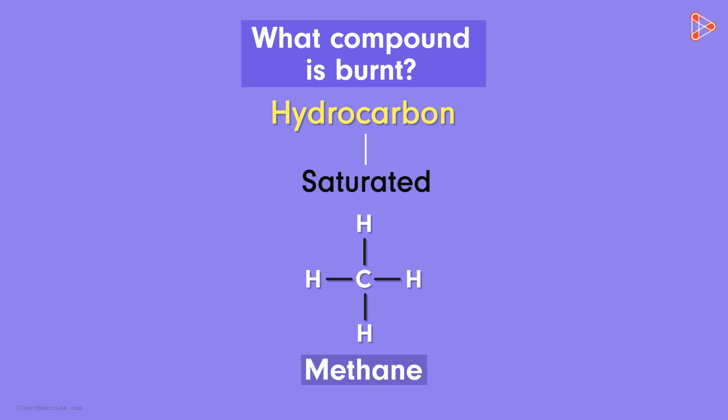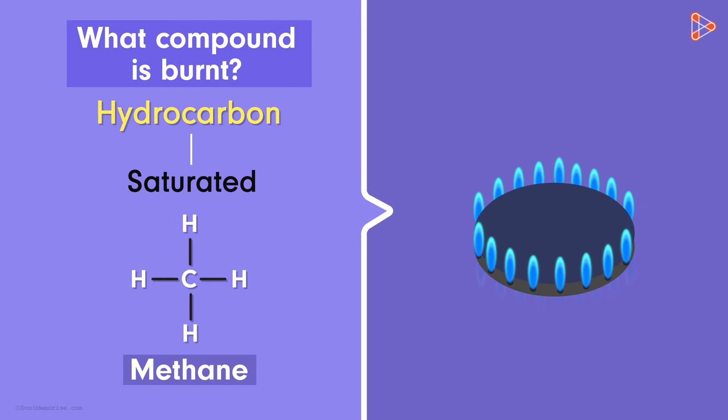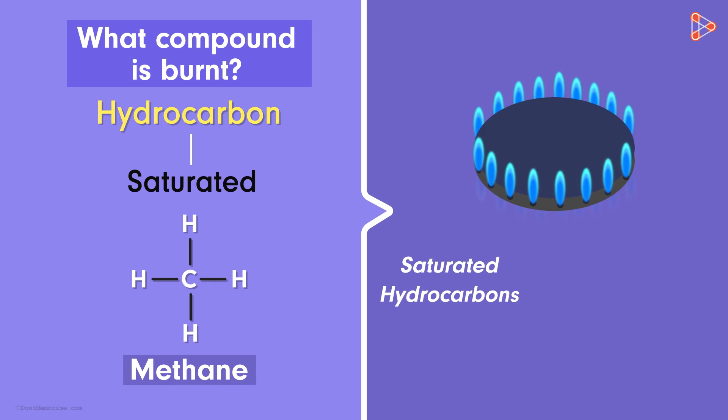We know that methane is a saturated hydrocarbon. And what type of flame is seen on burning methane? Yes, it's clear blue coloured flame. So are we trying to say that saturated hydrocarbons burn with a clear blue flame? Yes, and why is that?